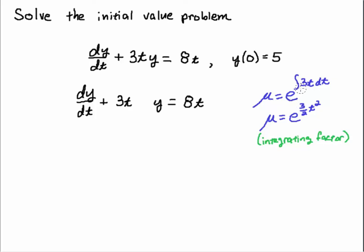So here's how I come up with the integrating factor. I take the exponential of the integral of this coefficient, 3T, and I integrate to 3T. So I get 3 half T squared. Then I multiply every term in the ODE by that integrating factor.